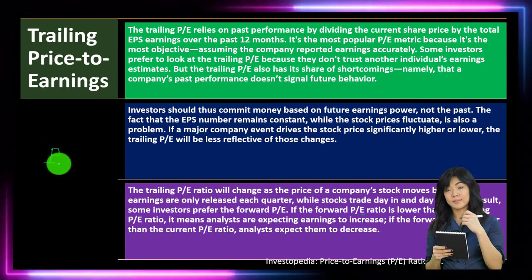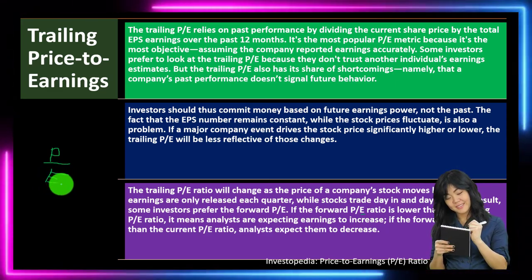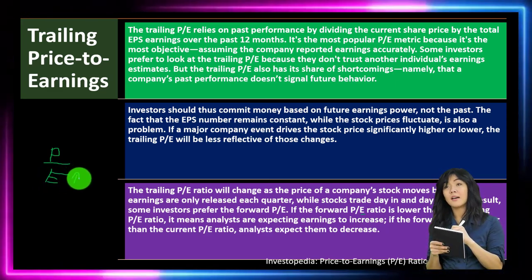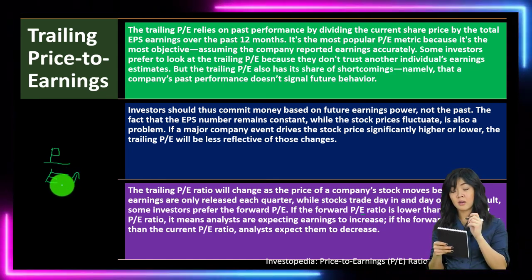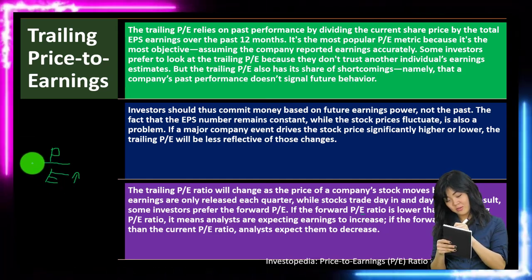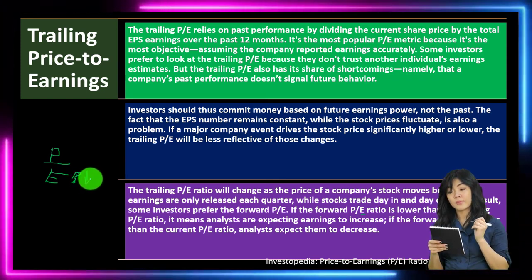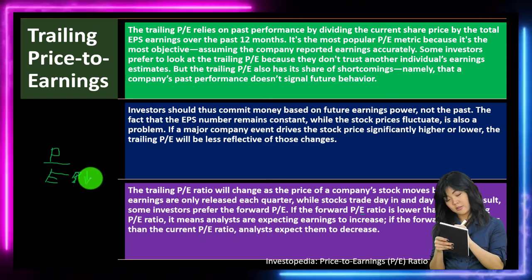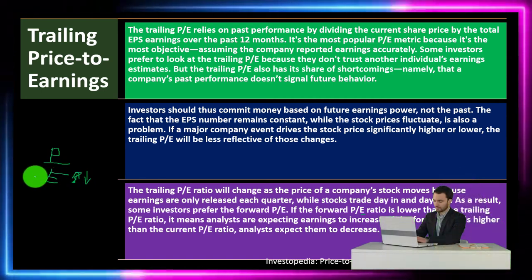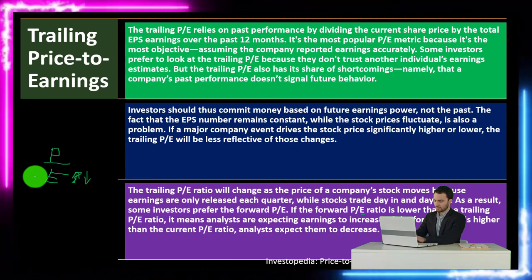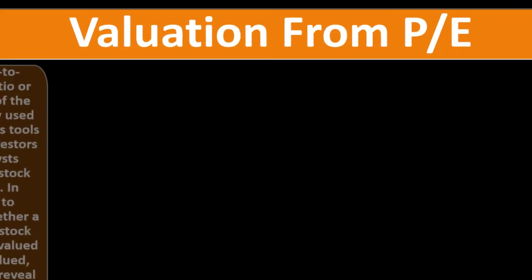As a result, some investors prefer the forward PE. If the forward PE ratio is lower than the trailing PE, analysts expect earnings to increase — a higher denominator makes the PE go down. If the forward PE is higher than the current PE, analysts expect earnings to decrease — a lower denominator increases the forward PE.